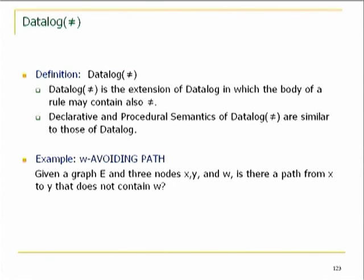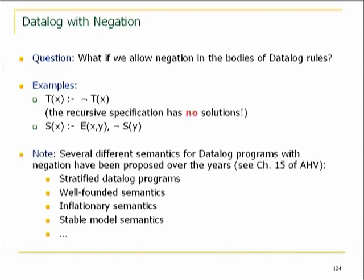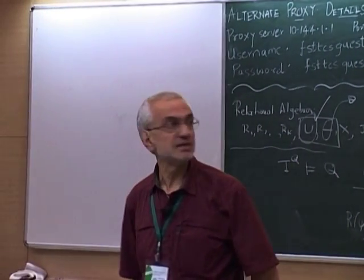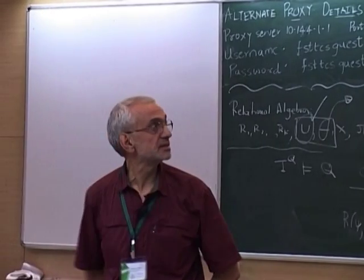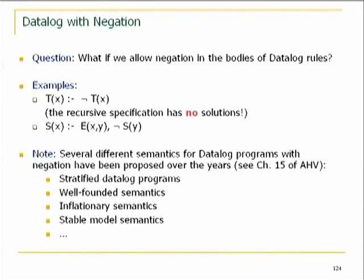There are extensions of datalog with inequality, and datalog with negation in the bodies of rules. This area was worked in great depth in the 80s and 90s and there is still work going on. You have to come up with the right semantics: there is stratified semantics, well-founded semantics, alternating fixed-point semantics, and stable-model semantics. Chapter 15 of the Abiteboul-Hull-Vianu book has a nice introduction to this.